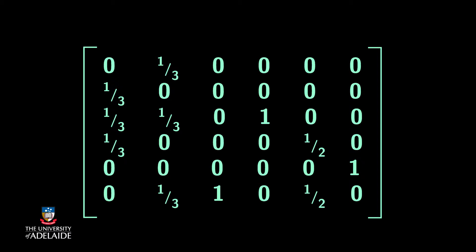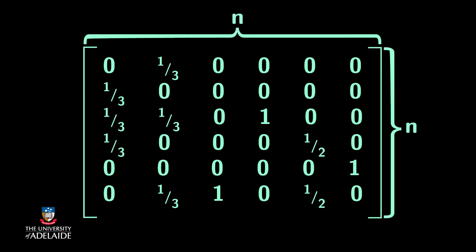The transition matrix of the web graph describes what happens to a random surfer after a single step. For a graph with n pages, the matrix has dimension n times n. In the matrix M, entry M_ij equals 1 over k if there is a link from page j to i, and the total number of outgoing links from j is k. If there is no link from j to i, then M_ij equals 0.